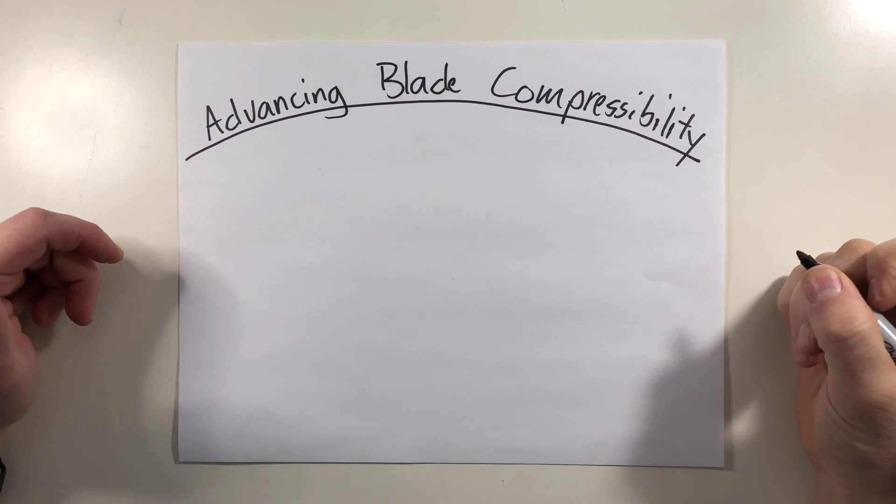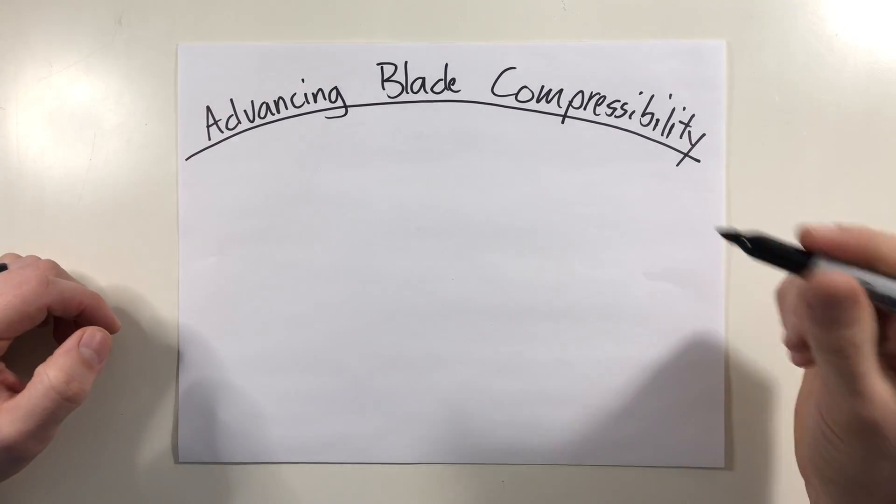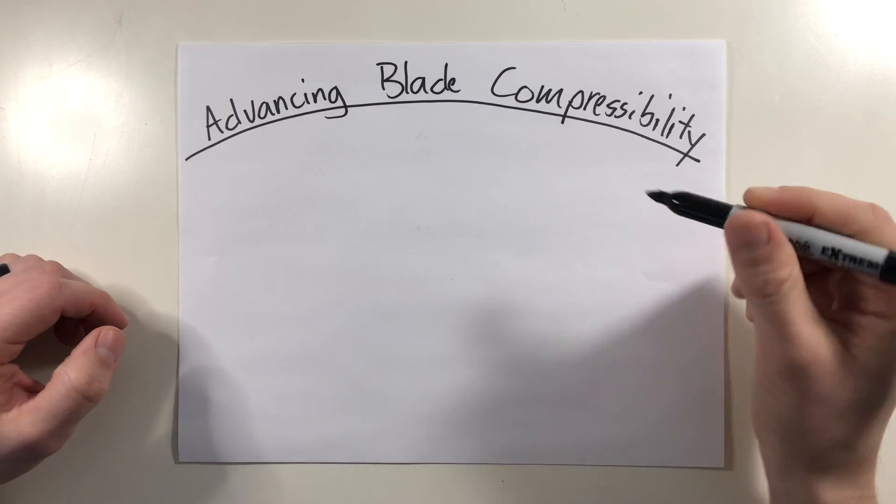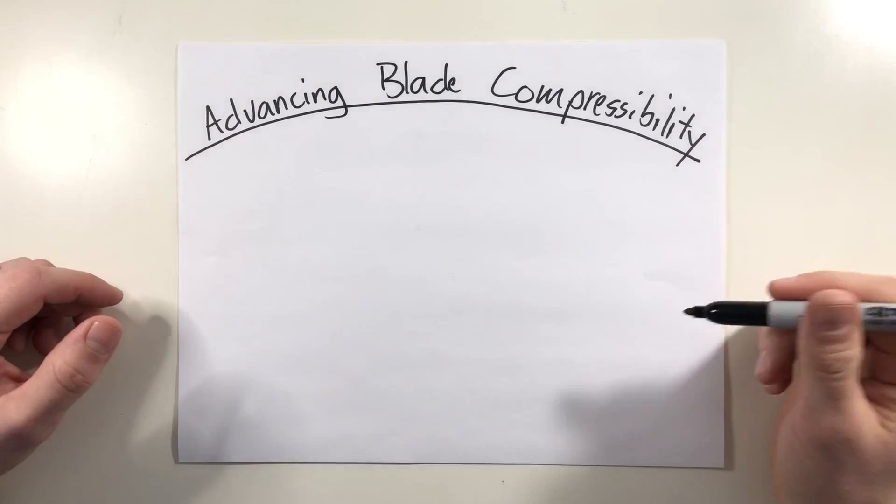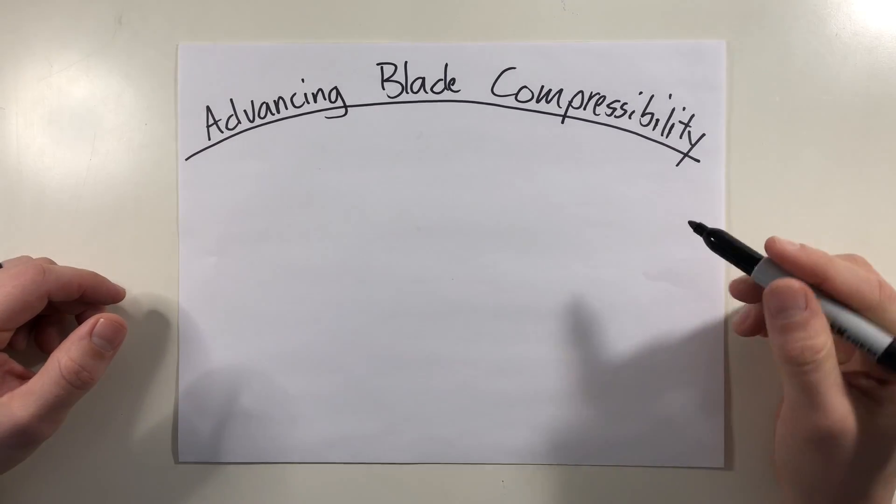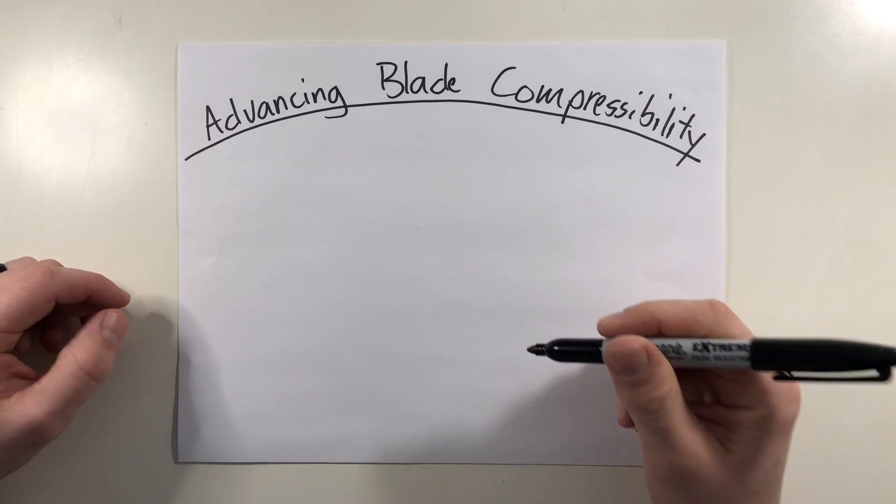Now, you may or may not have realized, but an aircraft's VNE, that's the velocity never exceeds speed, is not just based on retreating blade stall, but also advancing blade compressibility when in the right environment. So if you haven't seen my VNE video, I recommend checking out that first. I'll put a link in the description as well as above in the video. But let's take a look at what's going on here.